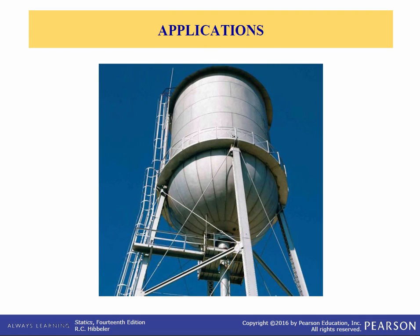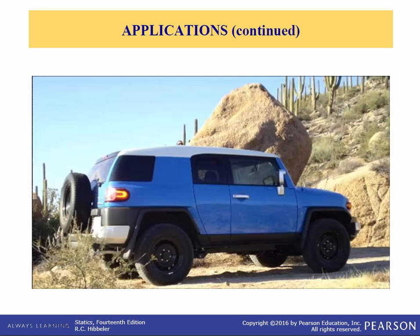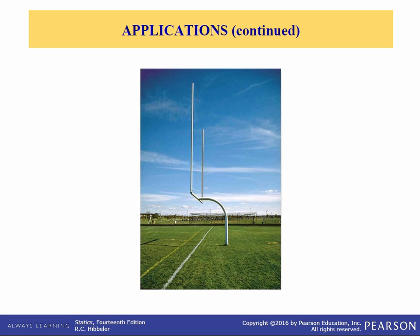But first some applications. To design the structure for supporting a water tank, as you see here, we will need to know the weight of the tank and the water, as well as the locations where the resultant forces representing these distributed loads act. One concern about a sport utility vehicle is that it might tip over when making a sharp turn. One of the important factors in determining its stability is the SUV's center of mass, and the center of mass should be low in order to maintain stability. To design the ground support structure for this goal post, it's critical to find the total weight of the structure and the center of gravity's location.